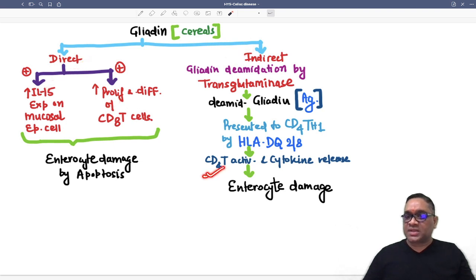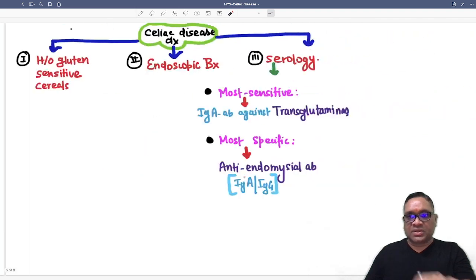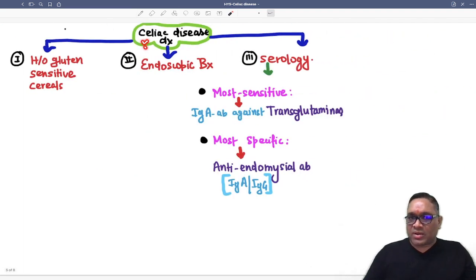When we think about diagnosis, we use multi-modality approach. Clinical finding: there will be a history of gluten sensitive cereals. When you deprive them, it will improve and when they take that, the condition will worsen. This is the clinical point of view. Then endoscopic biopsy, which I will discuss later. And then serology.